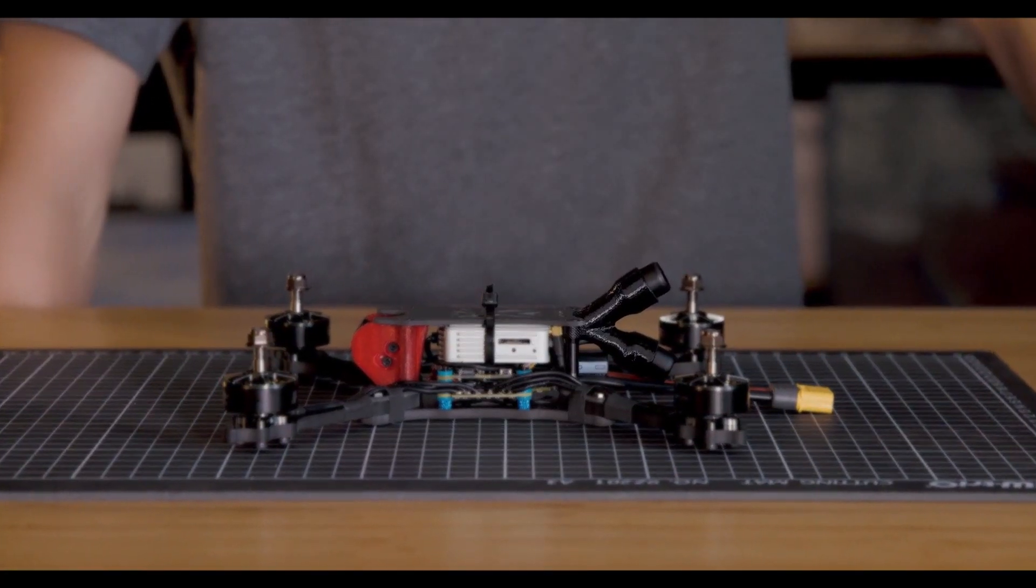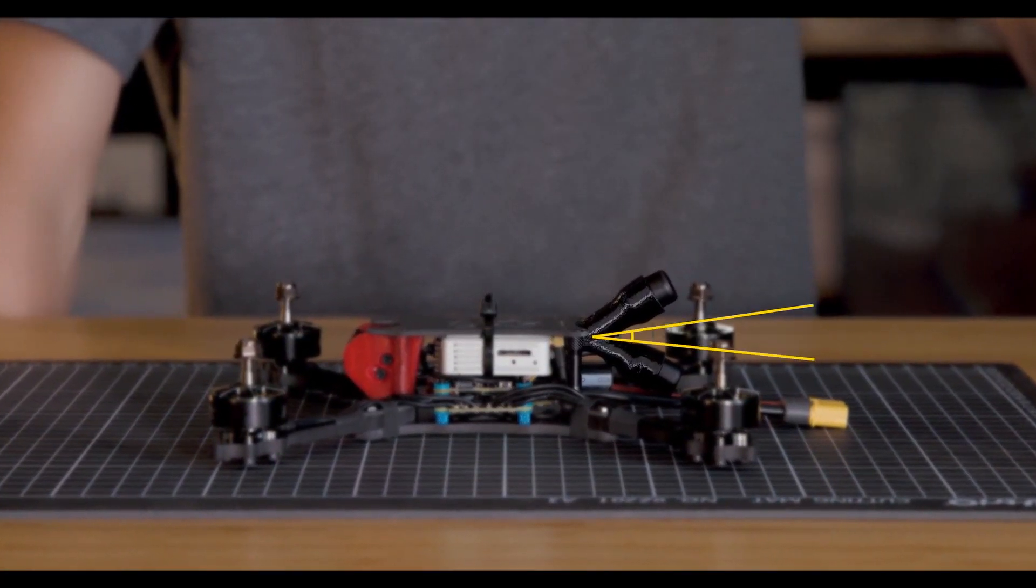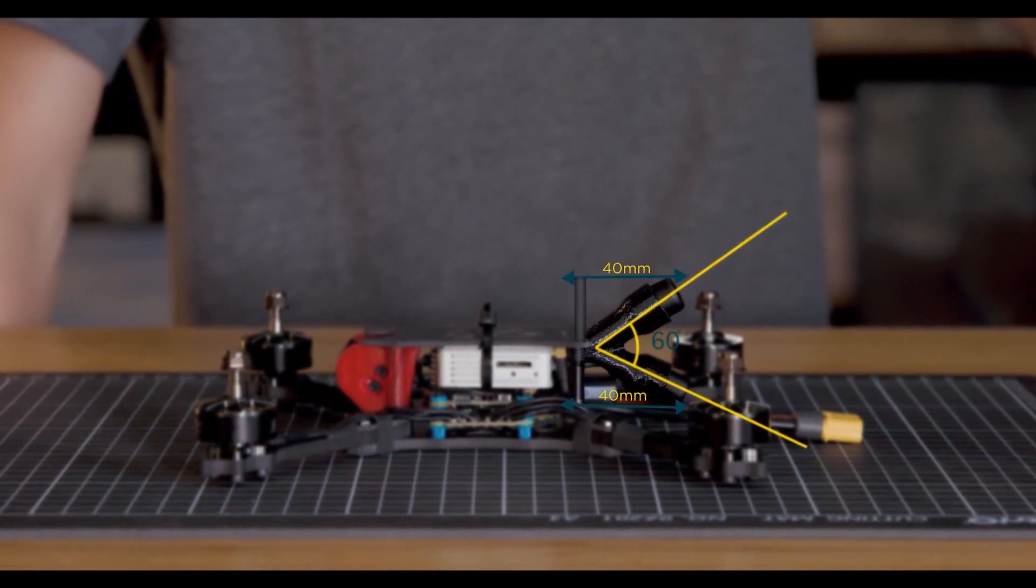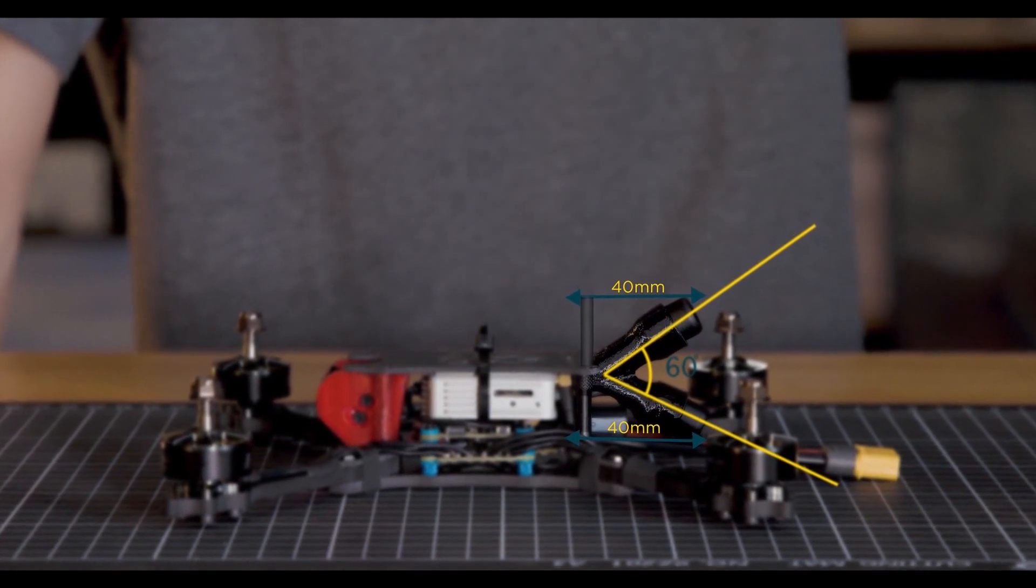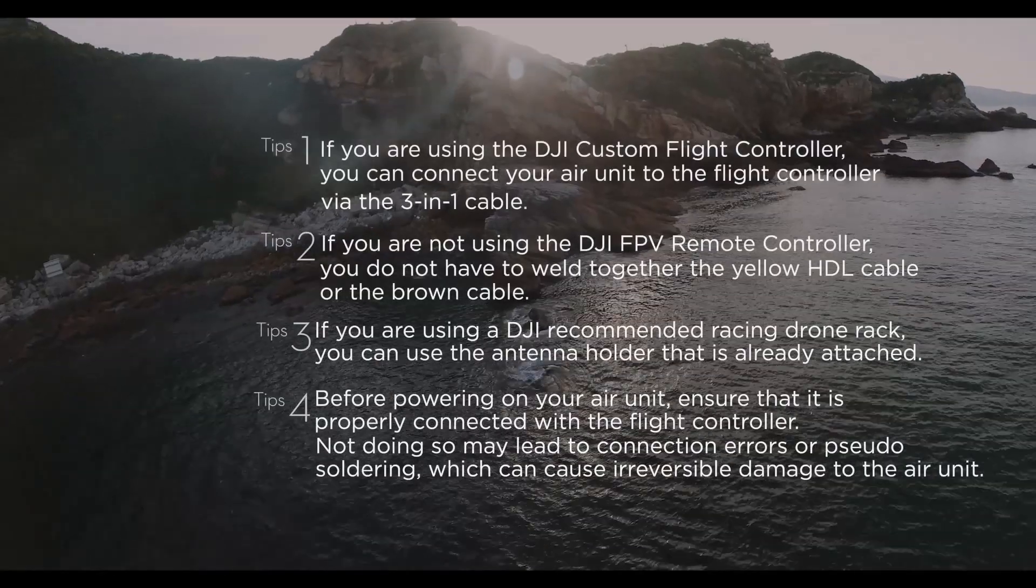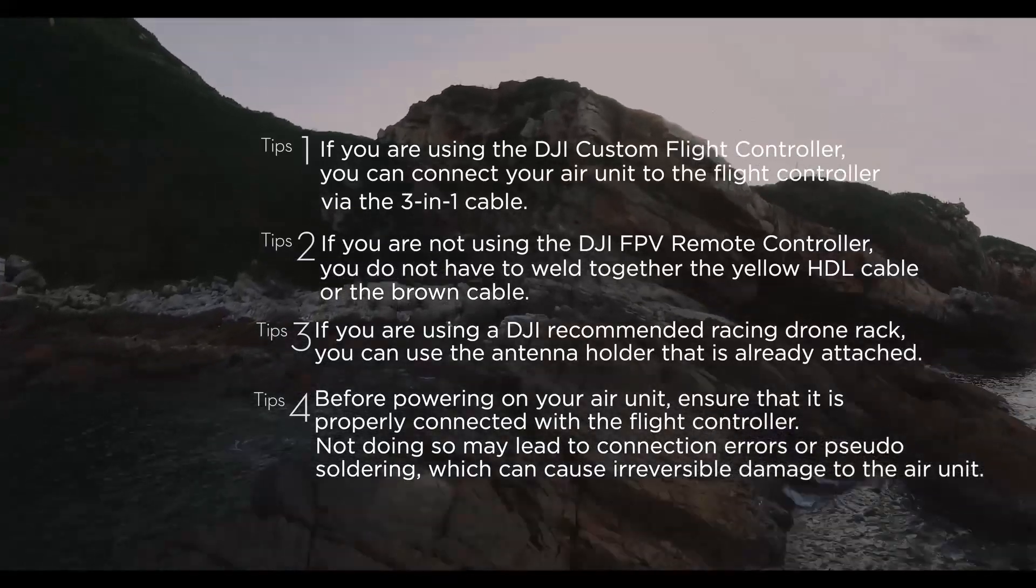If you are not using a DJI recommended racing drone rack, ensure that the angle of the two antennas included are 60 degrees and the distance between the antenna and the aircraft is 40mm. This will generate the best resource for data transmission.